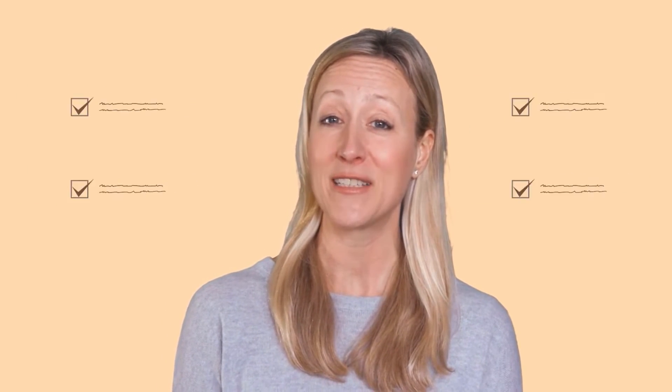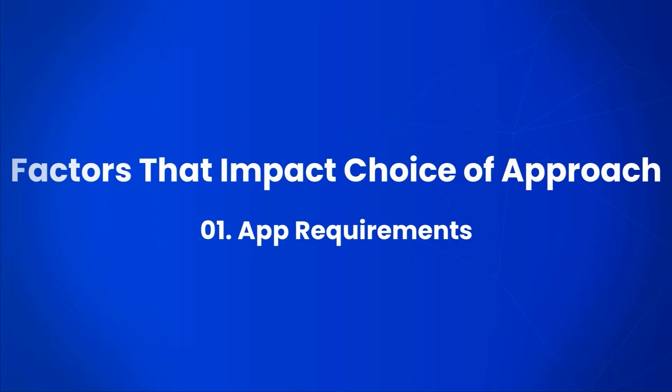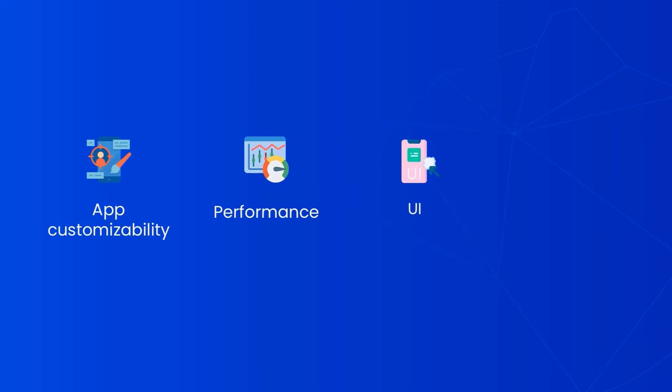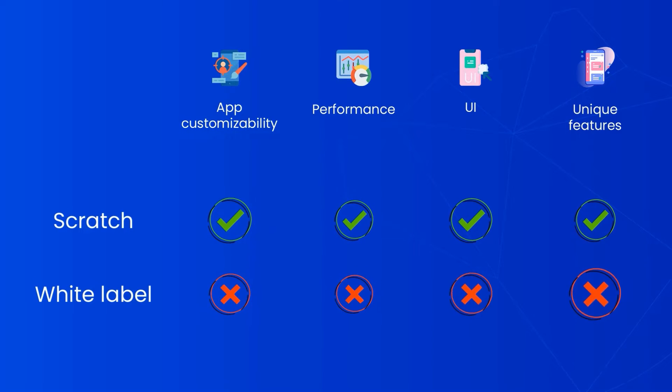Knowing about the ways to develop a hotel booking app is easy, but making a choice is difficult. To go with white label solutions or develop an app from scratch depends upon various factors. The first factor is your requirements from the app — customizability, performance, UI, and unique features are a few of the many things that one needs to decide upon. It is easier to add custom features, personalize UI, and enhance app performance while developing an app from scratch.